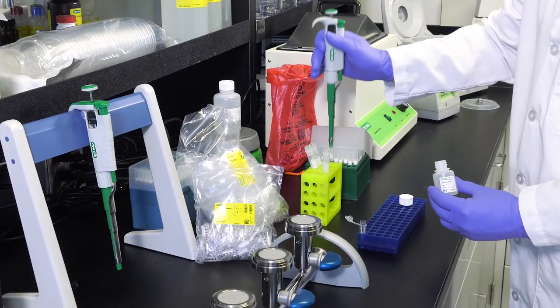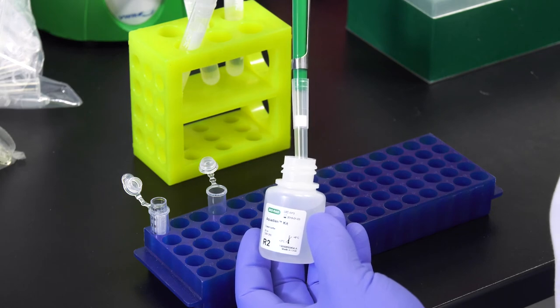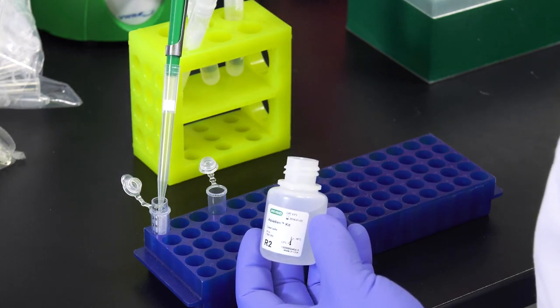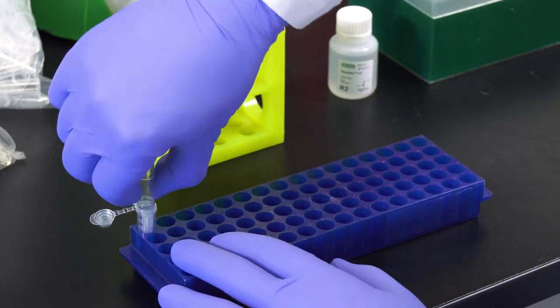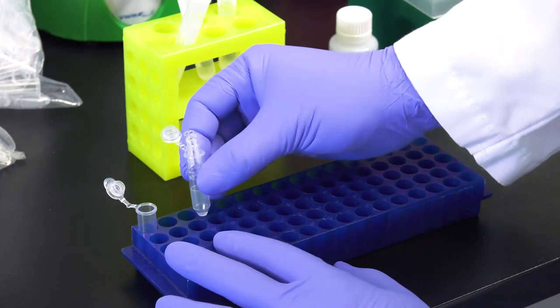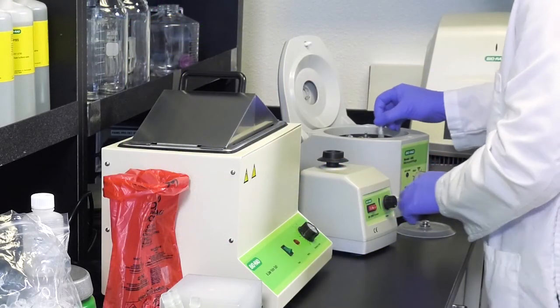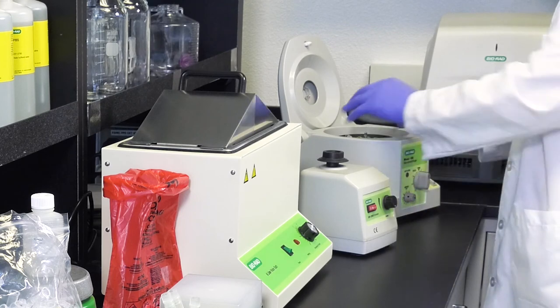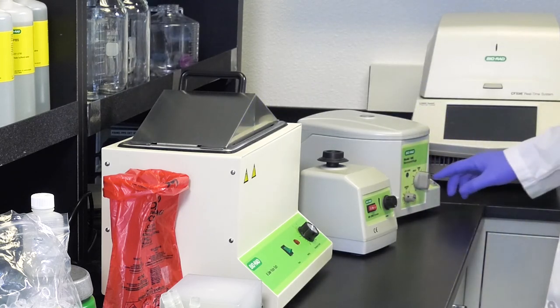The next step is to elute the DNA from the column. To do this, add 100 microliters of R2 solution to the purification column and throw away the collector tube. Cover the purification column with a clean collector tube and turn the whole thing upside down, transferring the column to a new tube. Centrifuge for three minutes at 1000 times G and then throw away the purification column. Note that the cap cannot be closed in this step.